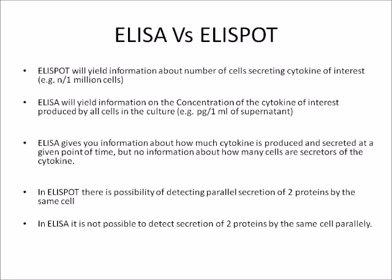Let us look at the difference between ELISA and LESPOT. LESPOT will yield information about the number of cells secreting the cytokine of interest. Whereas ELISA will yield information on the concentration of the cytokine of interest produced by all cells in the culture. So ELISA gives information about how much cytokine is produced and secreted at a given point of time, but it will not give any information about how many cells are the secretors of that cytokine.